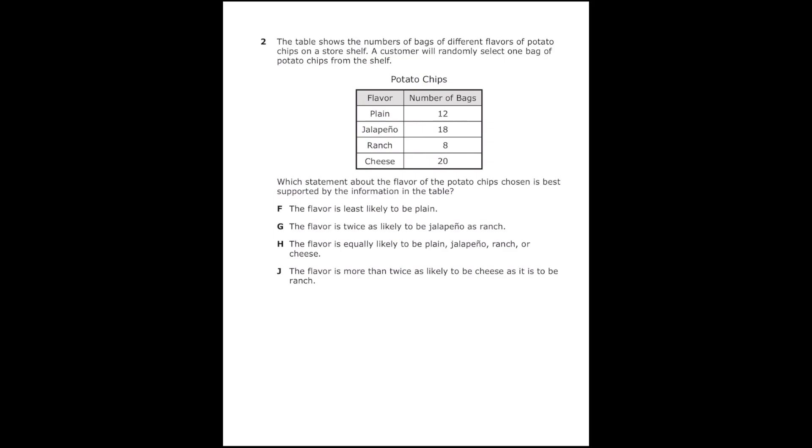I'm going to start going through the answer choices. Letter F says the flavor is least likely to be plain. Well, the smallest number is ranch, so ranch is the least likely. So letter F is not correct. Letter G says the flavor is twice as likely to be jalapeno as ranch. Jalapeno is 18, ranch is 8. Twice 8 is 16 which isn't 18, so it's not letter G.